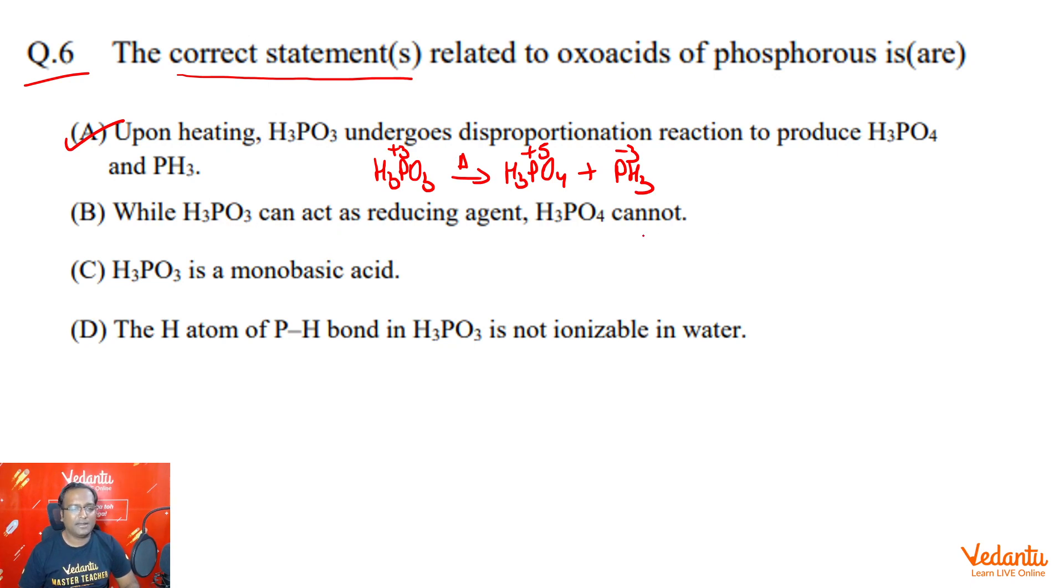While H3PO3 can act as reducing agent, H3PO4 cannot, absolutely correct. H3PO3 when acts as a reducing agent, itself can undergo oxidation to produce H3PO4, that is plus 3 oxidation state goes to plus 5 oxidation state.